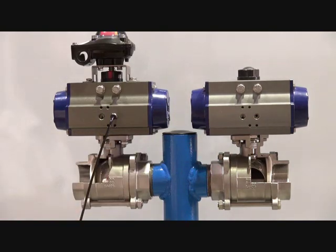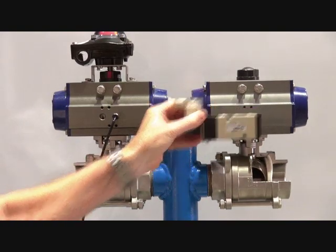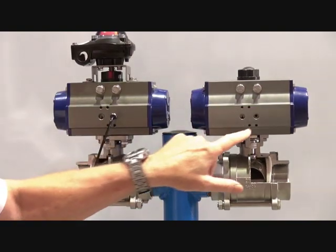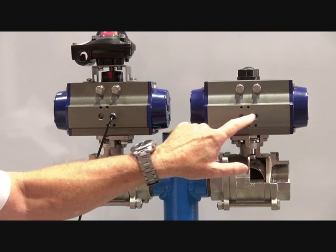With the double acting we can put a NAMUR solenoid directing onto there, or we can use a standalone solenoid and run the two air lines to either side.